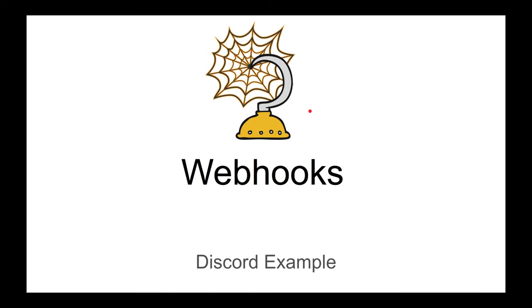Webhooks are custom callback URLs that an application can call to communicate with another application. Popular uses of webhooks include GitHub, Slack, and Discord. For example, Discord creates a webhook that you can share with other applications, and those applications hook into that URL and post messages. A great use case is IFTTT — if something happens in your application, like YouTube uploading a video, you call that webhook and do something.